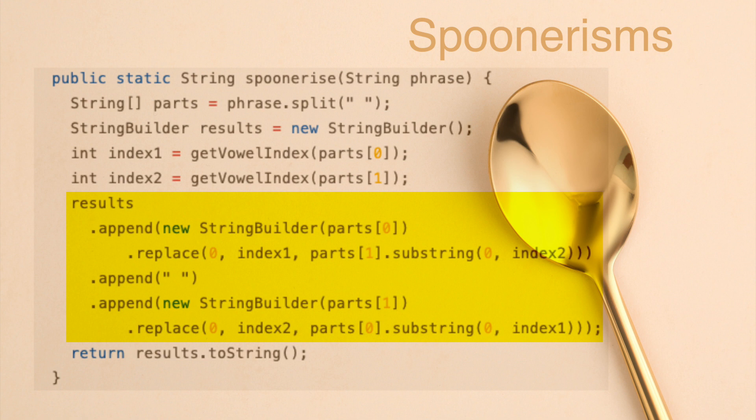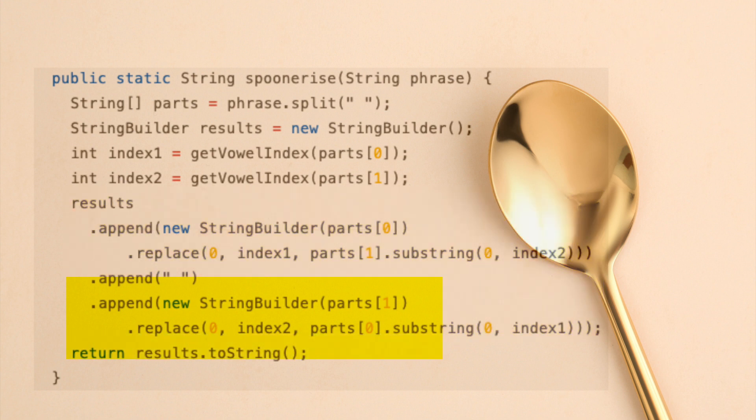A space is then appended to the result string builder. We then instantiate another string builder containing the second string from the parts array. We replace the characters at the index position of 0 to the index position of the value of index2, with the substring of the first part of the incoming string from the index position of 0 to the index position of the value of index1. The resulting string builder is then converted to a string and returned to the caller.